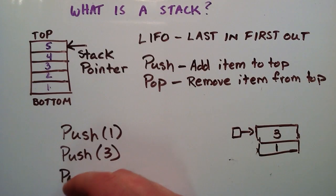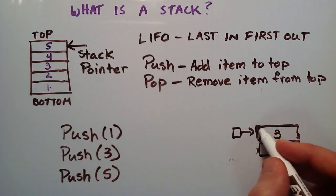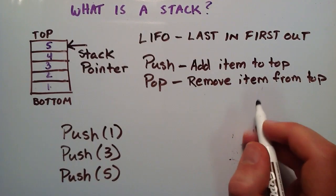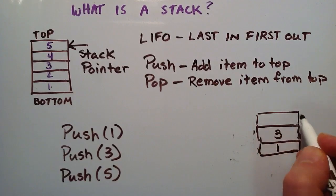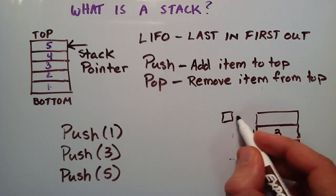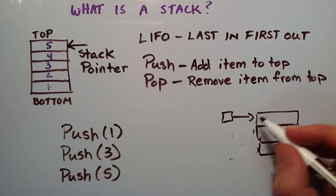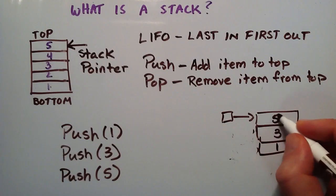If we wanted to do another push, we could do push 5 if we wanted to. So, basically that's just going to create some sort of new node here, move our stack pointer to the next part and place the value 5 in it.